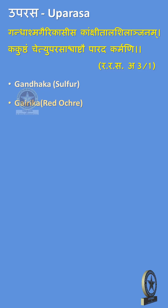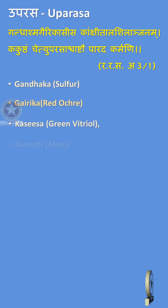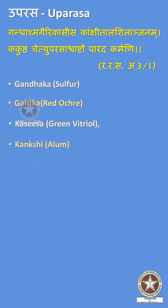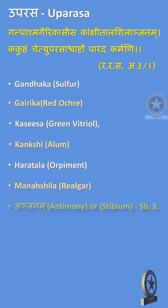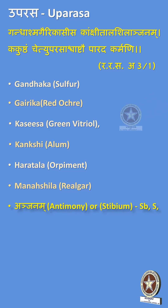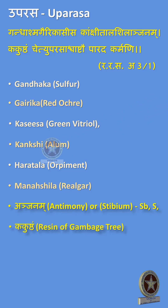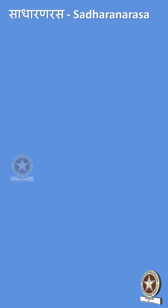The remaining Uparasah drugs are: Gairika (Red Ochre), Kasisa (Green Vitriol), Kangshi (Alum), Haratala (Orpiment), Manashila (Realgar), Anjana (Antimony Sulphide), and Konkusta, that is Resin of Gamboge Tree.